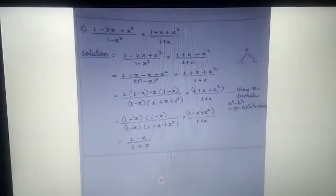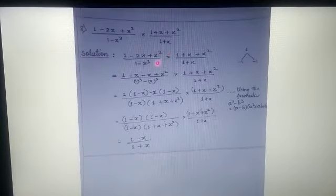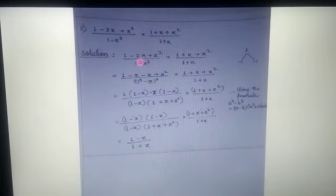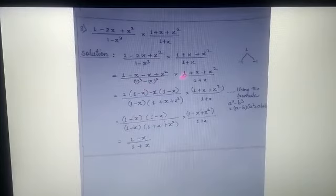Now sum 8: (1 - 2x + x²) / (1 - x³) × (1 + x + x²) / (1 + x). First we factor 1 - 2x + x². The coefficient of x² is 1 and the constant is 1, so 1 × 1 = 1. The factors of 1 giving middle term -2 are -1 and -1. So we write 1 - x - x + x², and for the denominator 1 - x³ we use the a³ - b³ formula: (1 - x)(1 + x + x²).